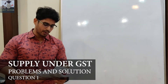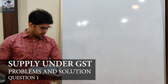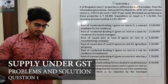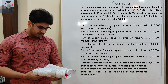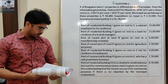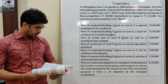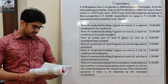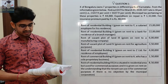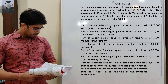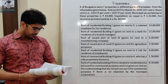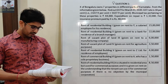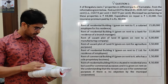Concept of supply - Question 1: X of Bangalore owns properties in different parts of Karnataka. Find out GST for the quarter ending March 31, 2020. GST rate is 18%, that is CGST 9% and SGST 9%. Municipal tax pertaining to these properties is Rs. 44,000. Expenditure on repair is Rs. 1,32,000. Fire insurance paid by Mr. X is Rs. 48,000.